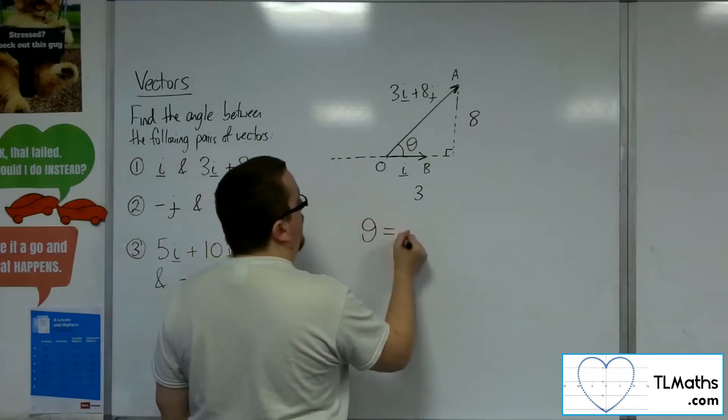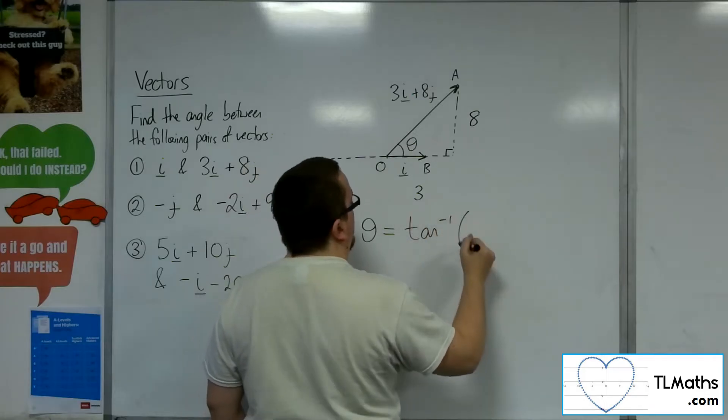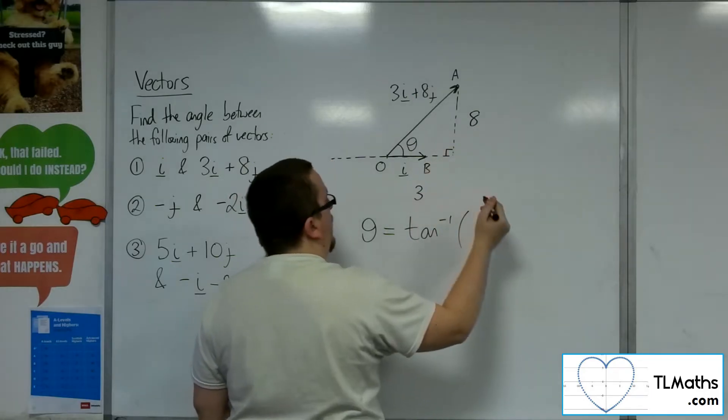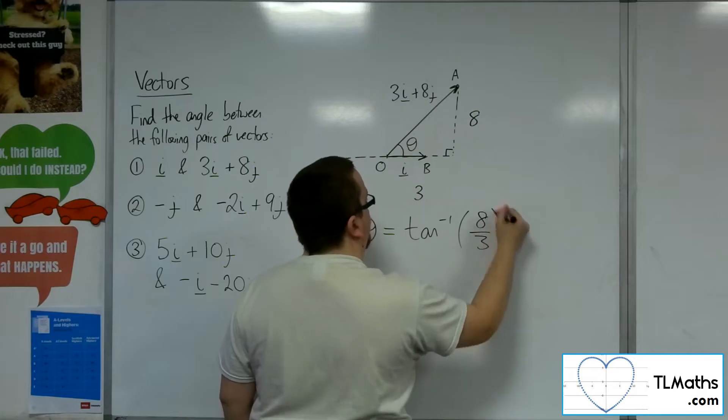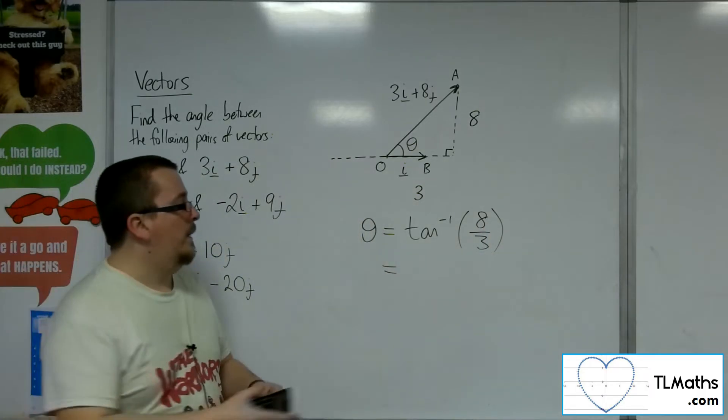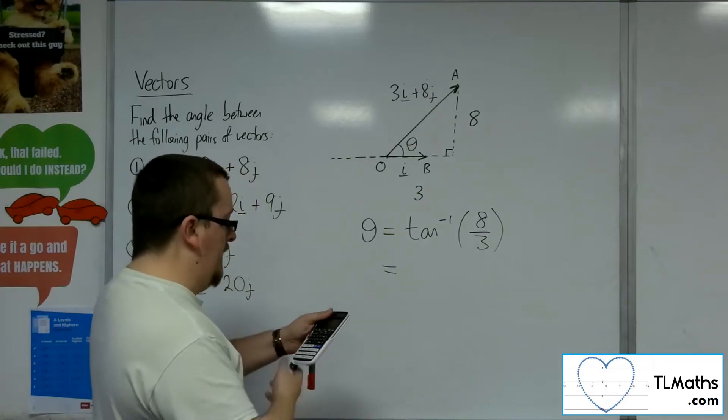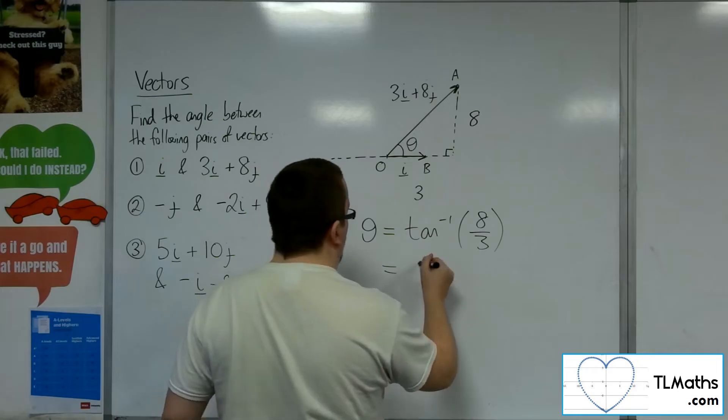And so if I want to find this angle here, I can just use basic trigonometry in order to do it. So the angle in this case will just be the inverse tan of the opposite over the adjacent, so inverse tan of 8 over 3 is 69.4 degrees.